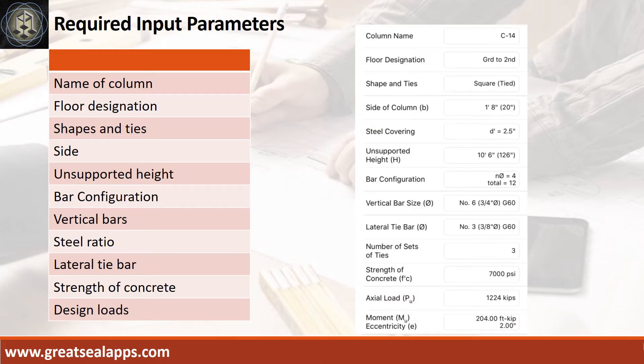Enumerate input parameters required. Column name, C14, floor designation, ground to second, square shape and lateral ties, side of column, 20 inches, steel covering, 2.5 inches, unsupported height, 10 feet 6 inches.